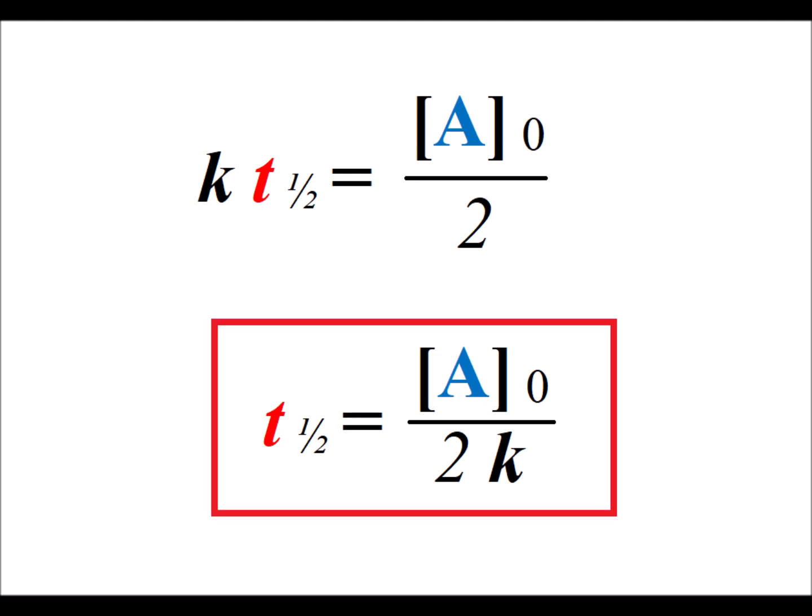Therefore, the half-life for a 0th order reaction is the initial concentration of the reactant A divided by 2 times the rate constant k.